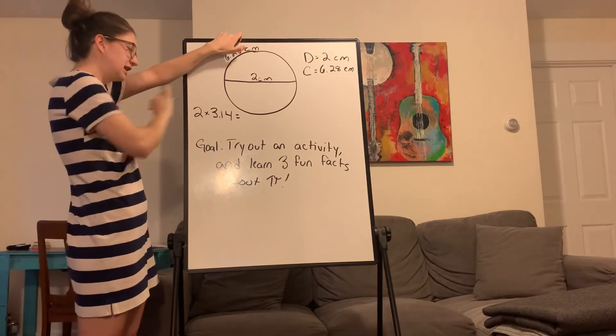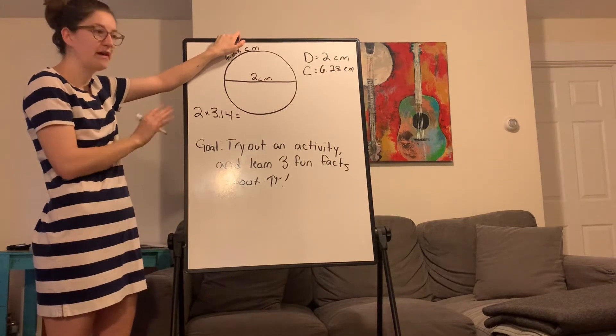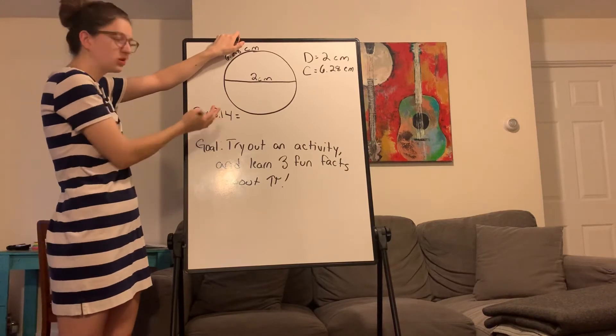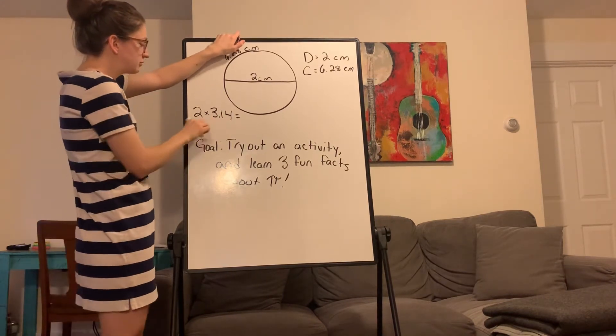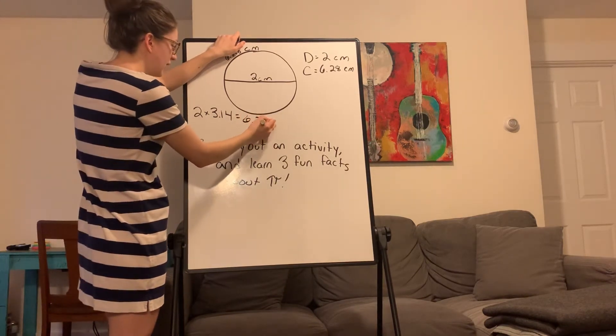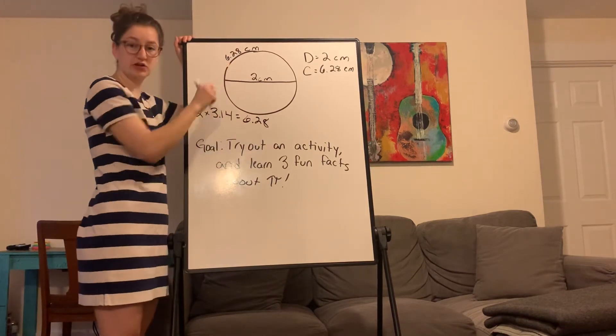Remember that Pi is a decimal that goes on forever and never ends, so we round it. Usually to 3.14 because that's close enough for what we're doing. 2 times 3.14 gets us 6.28, which is our circumference.